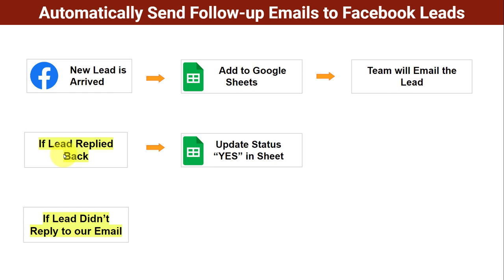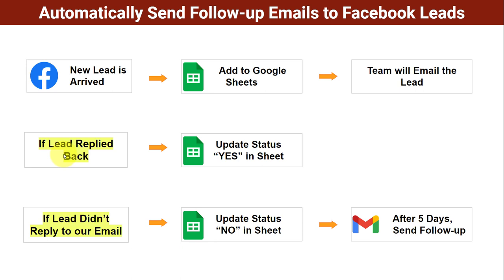What will happen? You just need to simply update the status as 'no' in the sheet and the automation will check the whole sheet for which particular leads the status is mentioned as 'no'. It will automatically send a follow-up email to all those leads — something like: 'Hey, I was trying to contact you but unable to reach. Let me know when we can have a call.' This automation is automatically going to send follow-up emails after five days of the first contact date to all your Facebook leads whose status you are updating as 'no'.